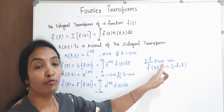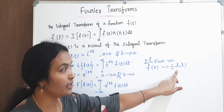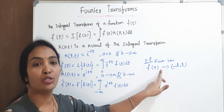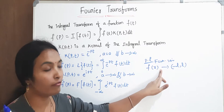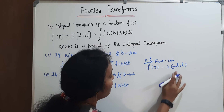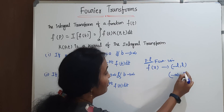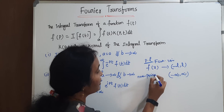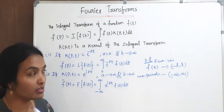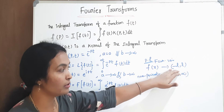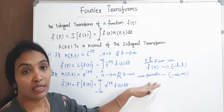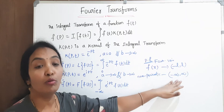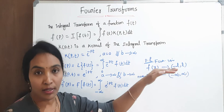Fourier series is applicable only for periodic functions in bounded intervals. But by extending this concept to non-periodic functions, defining the interval as unbounded — that is, minus infinite to infinite — the function which is non-periodic can be expressed. In Fourier series, it is applicable only for bounded intervals. In Fourier transforms, it extends to non-periodic functions with limits extended to unbounded, and it can be expressed as a Fourier transform.